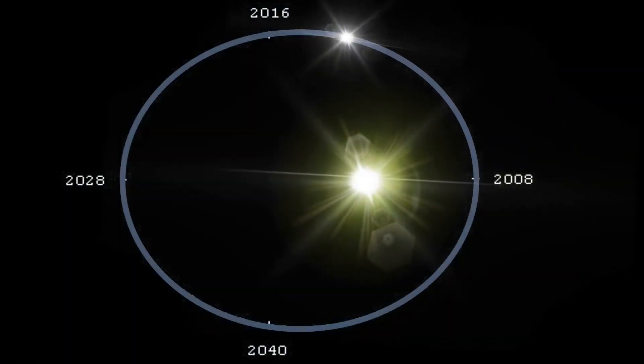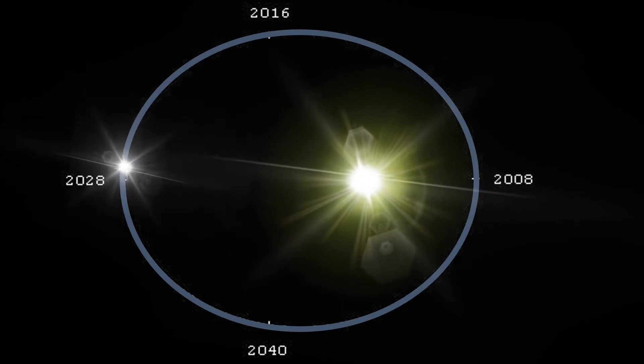A binary star system, Procyon consists of an F-class main sequence star in orbit with a faint white dwarf companion. The pair orbit each other with a period of 40.84 years.